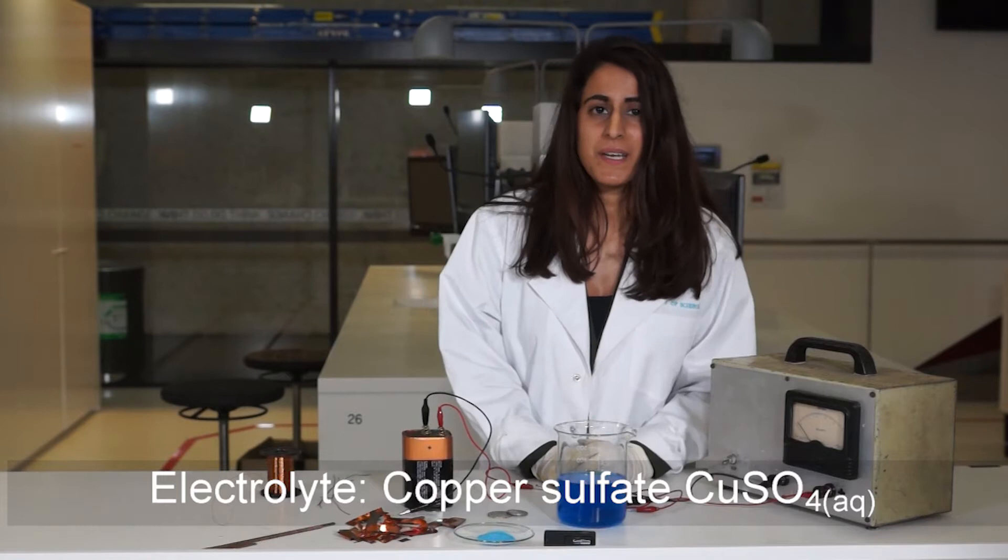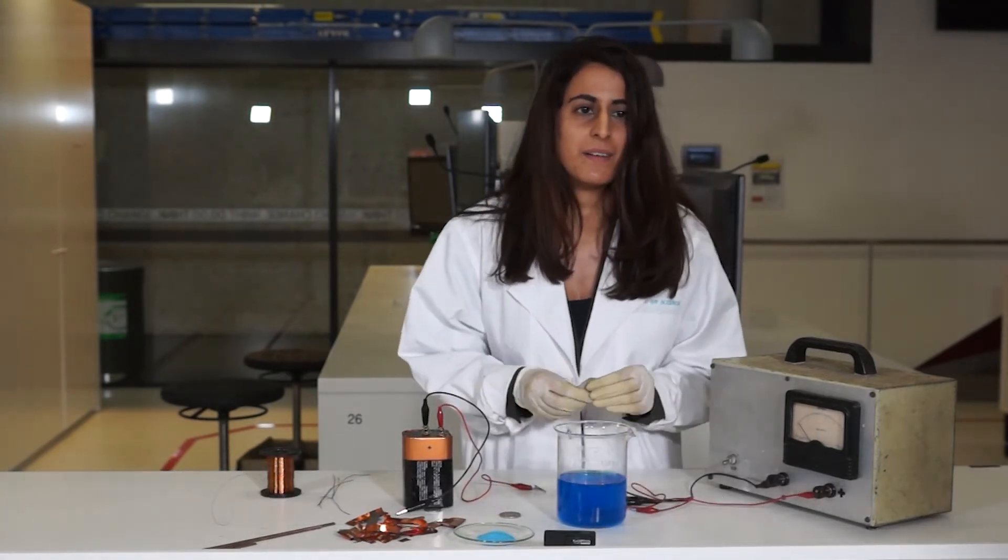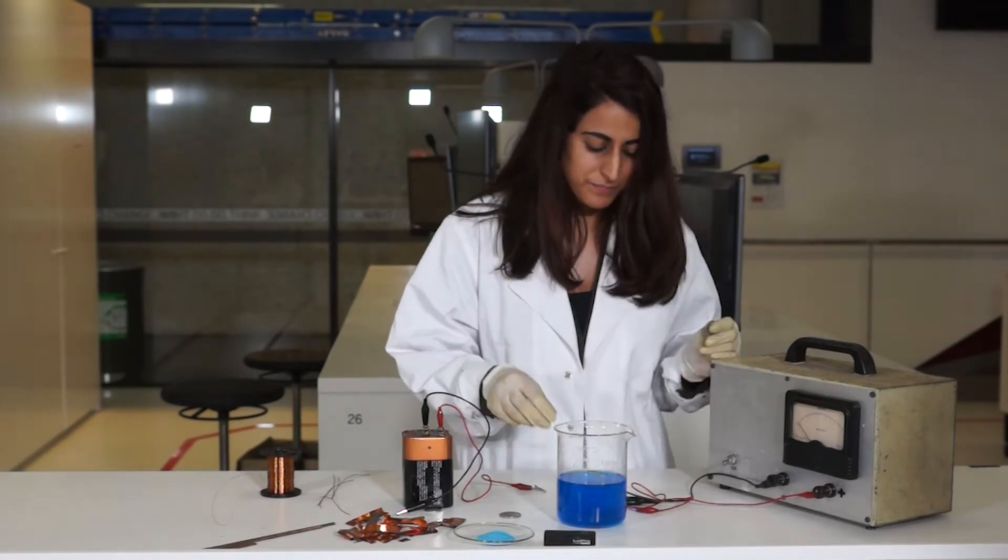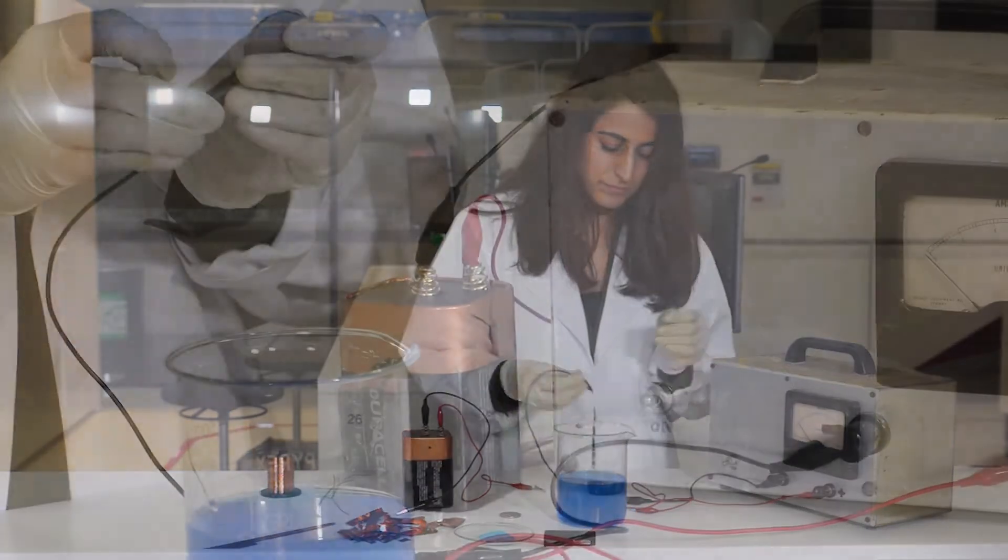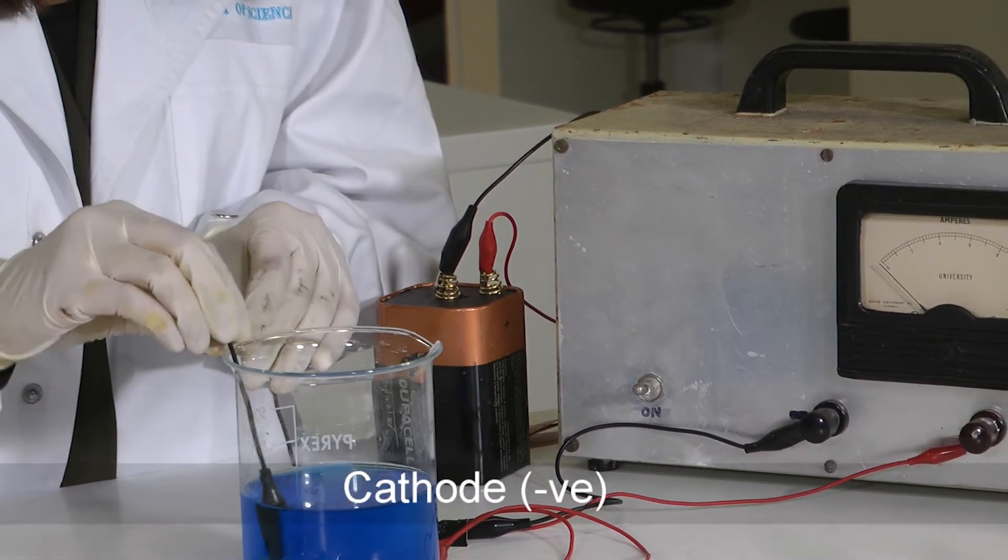And now we need a material which to electroplate. Let's use this 40 cents coin. We're going to connect this to the negative terminal of the battery, and this is called the cathode.